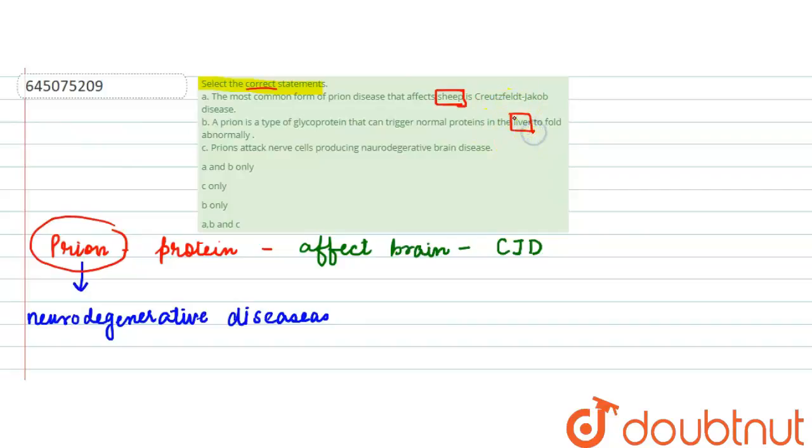And the last statement says prion attacks nerve cells producing neurodegenerative brain disease. This statement is actually right because we just understood about prion. So ultimately, our option two that says C only is the correct option, whereas rest all are the wrong ones.